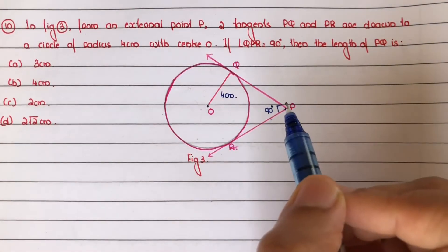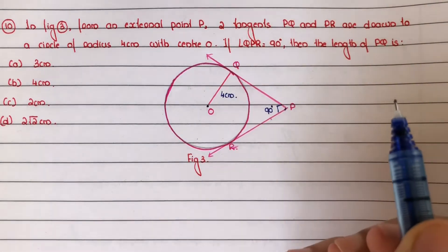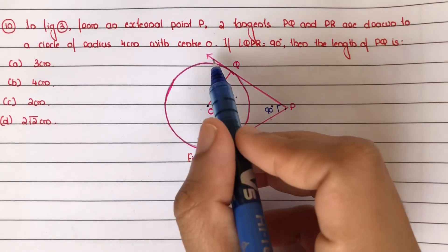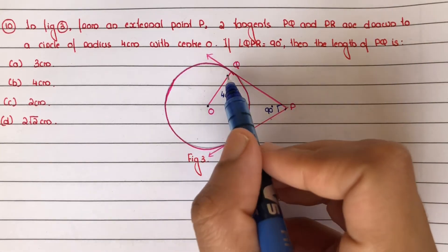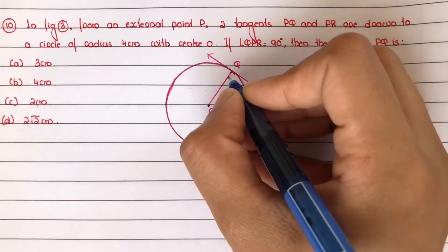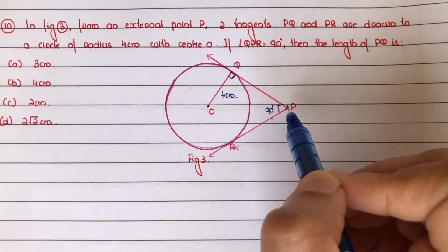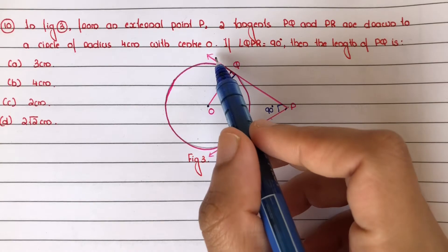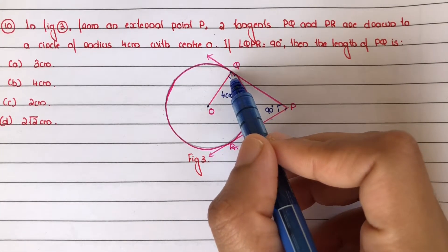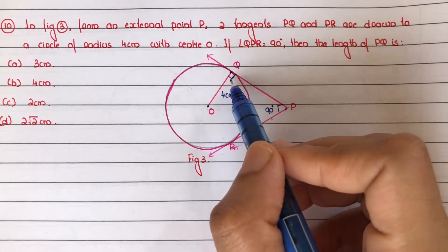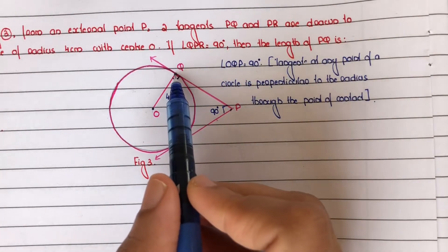First step: OQ is the radius of the circle and PQ is the tangent from external point P. So angle OQP is 90 degrees, because the tangent at any point of a circle is perpendicular to the radius through the point of contact. So this angle is 90 degrees.